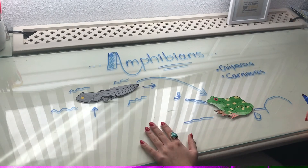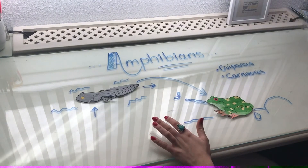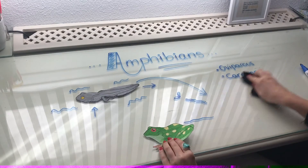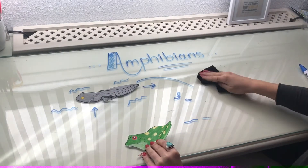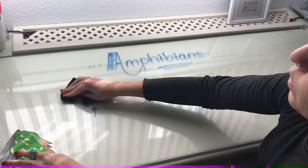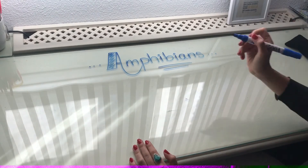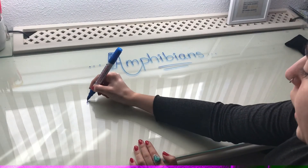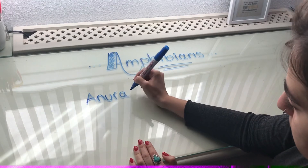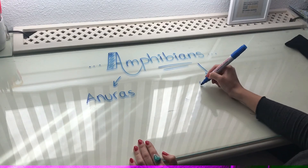We are going to continue with amphibians. There are two types of amphibians — I don't know if you know any of them. The first group of amphibians is called Anurans, and the other group is called Urodeles.